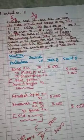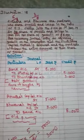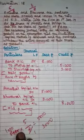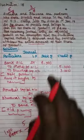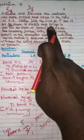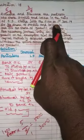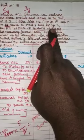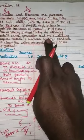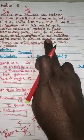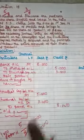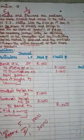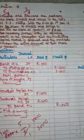In this illustration, you have learned that when a new partner brings the goodwill amount, it should be distributed among the old partners in their sacrificing ratio.